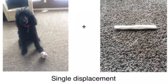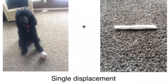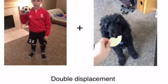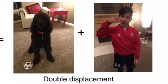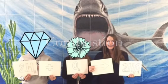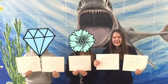Single reactions flip the elements of the product and reactant side. Double reactions switch two elements rather than one. Combustion reactions yield H2O when oxygen is involved at all.